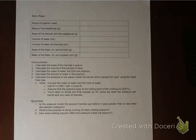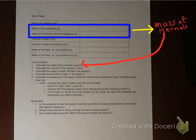So let's look at the back side of our data table and look at how we're going to fill this information out. So first of all, for brand of popcorn used, you just want to write either white or yellow. So right here you want to write white or yellow for brand of popcorn. So no big deal. So the next data that you're going to fill in are these next two boxes, the mass of the weigh boat and the mass of the kernels in the weigh boat.